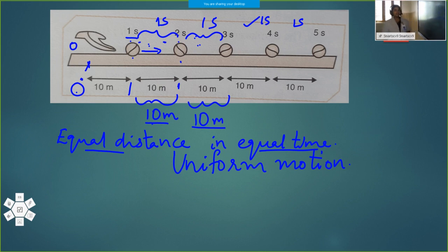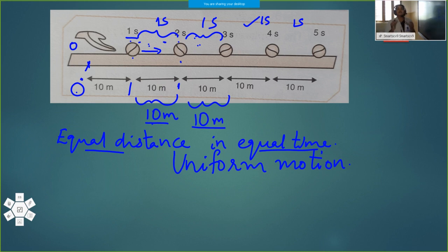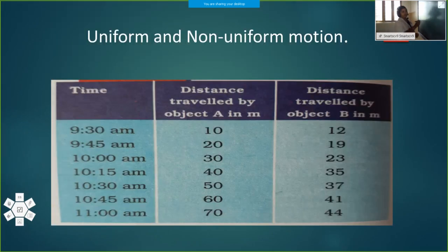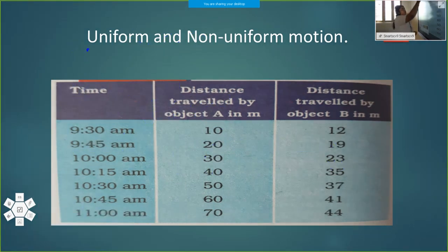If it travels unequal distance — imagine a car moving in a crowded road — it cannot travel equal distance in equal intervals of time. So we call the motion non-uniform, because the distance traveled is unequal. Let us see non-uniform motion with another example: uniform and non-uniform motion.